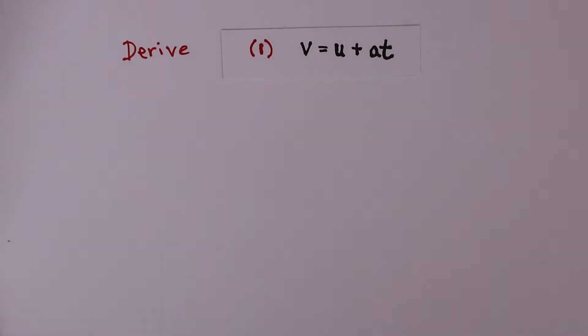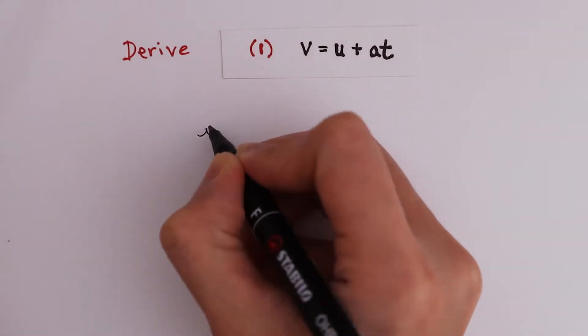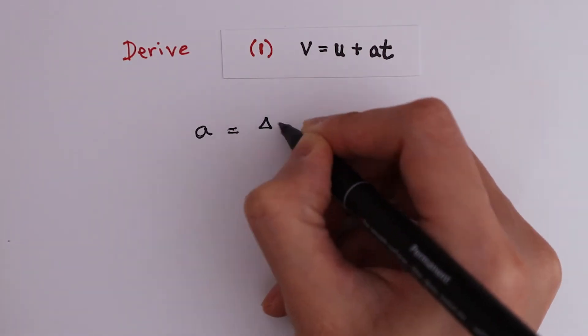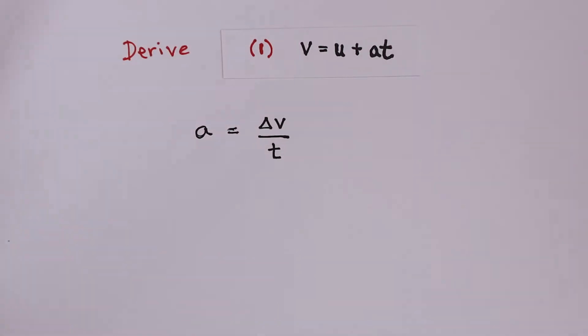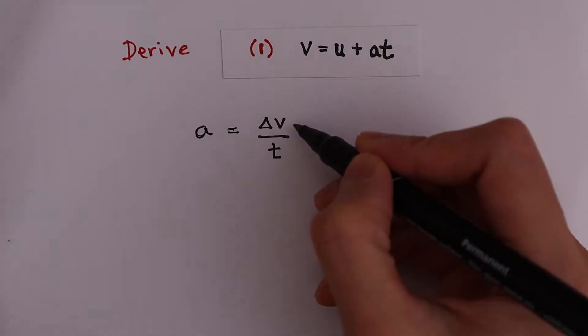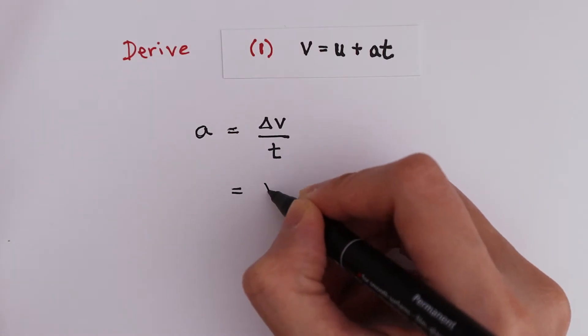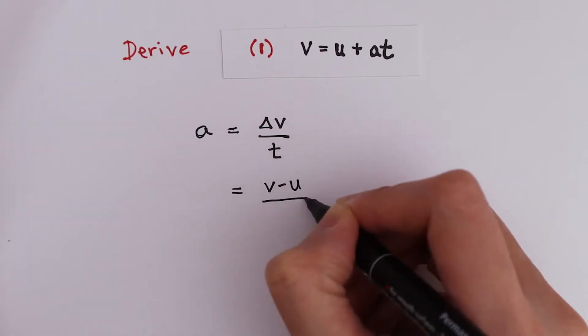The definition of acceleration is how quickly an object can change its velocity. From this, we can write acceleration as the change in velocity over time taken. Change in velocity is the final velocity minus the initial velocity.